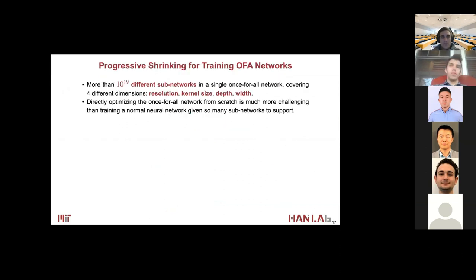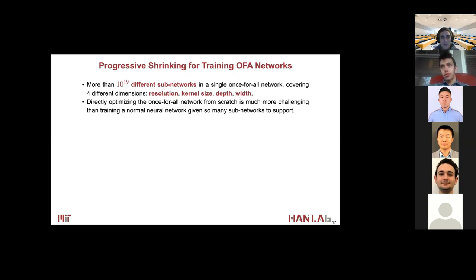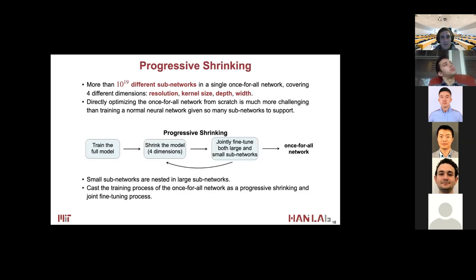To enable this high flexibility, we cover four different dimensions of neural architectures: resolution, kernel size, depth, and width. In total, a single Once-for-All network encompasses more than 10^19 different subnetworks. Given so many subnetworks to support, it becomes much more challenging to optimize compared to training a normal network. We introduce the progressive shrinking technique to address this problem. Specifically, we treat the training process of the Once-for-All network as a progressive shrinking and joint fine-tuning process, starting with training the full network, then progressively shrinking it to support smaller subnetworks while jointly fine-tuning both large and small subnetworks to avoid forgetting.